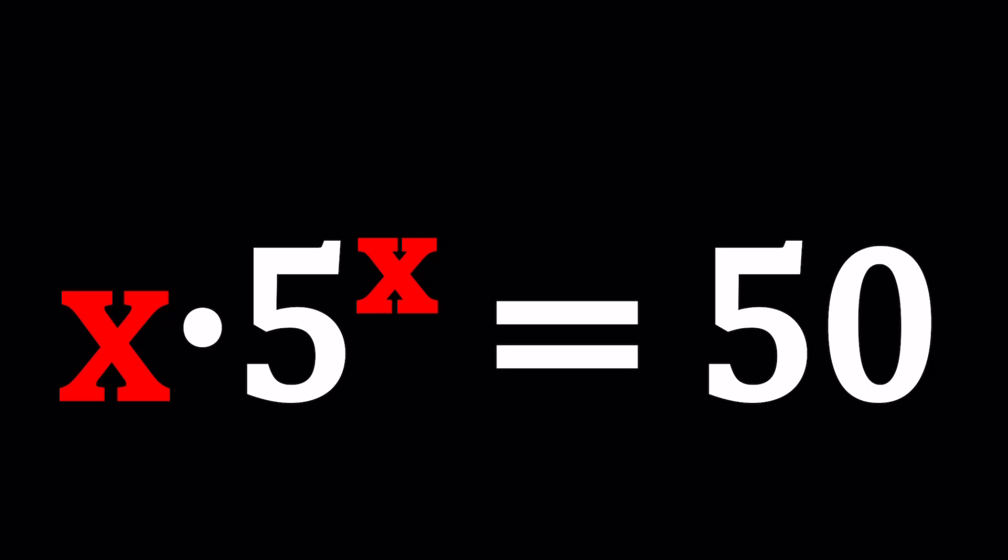Partially exponential and partially polynomial or linear. We have the product of x and 5 to the power x and that's equal to 50. And we're going to be solving for x values.